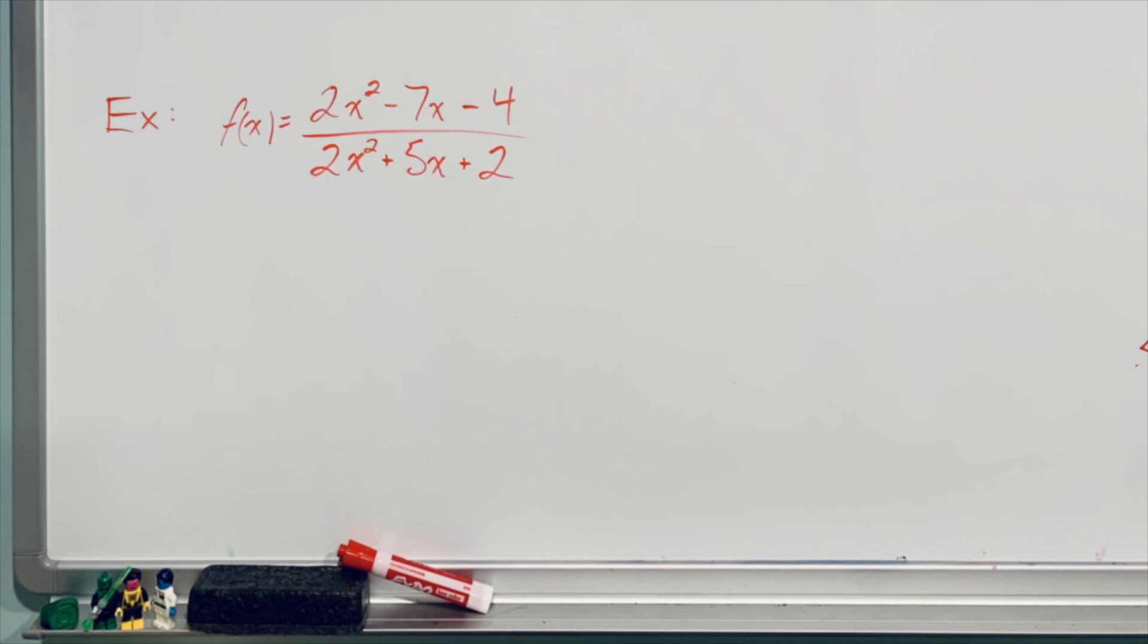We have f of x equals 2x squared minus 7x minus 4 over 2x squared plus 5x plus 2. And what I'm going to do with this function is I'm going to analyze it for a few key pieces of information.